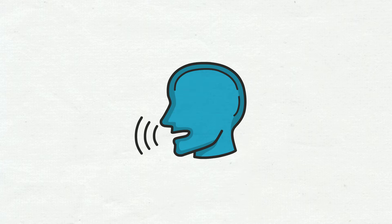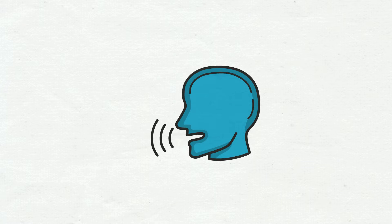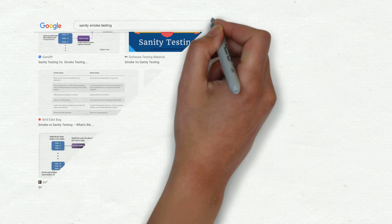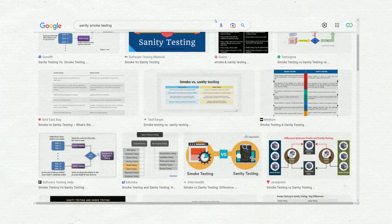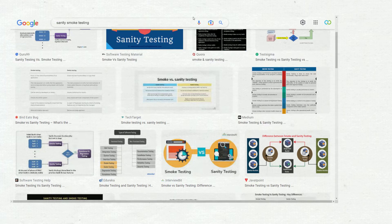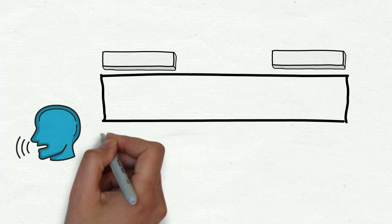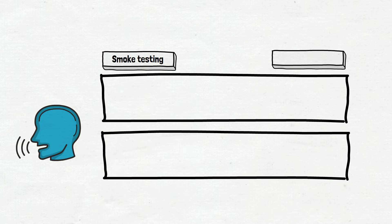This time we start with the human language. What do people and testing instructors say about sanity and smoke testing? If you google it you can see the common picture. We have already seen it with the testing types and test techniques — everybody has their own opinion and says completely different things. In this video we'll add our opinion to confuse you even more. We have read many websites and our conclusion is the following.